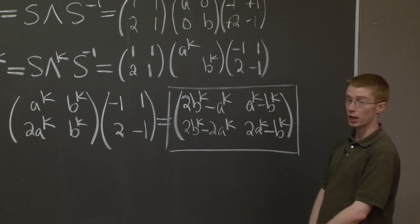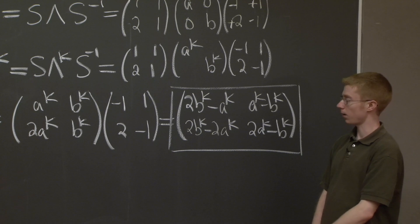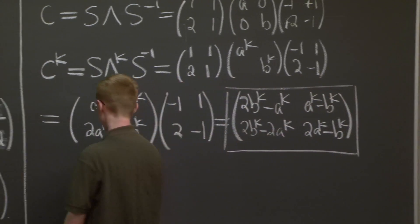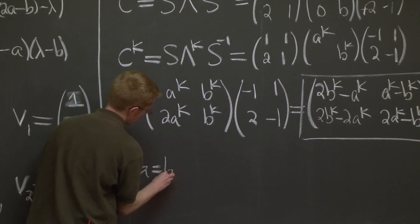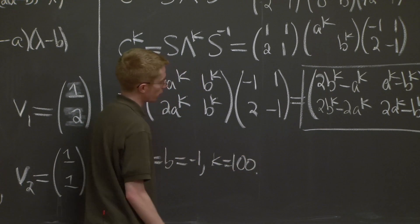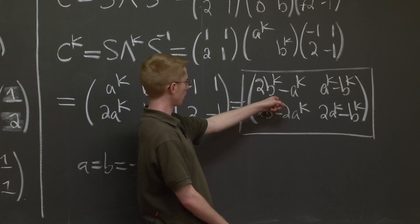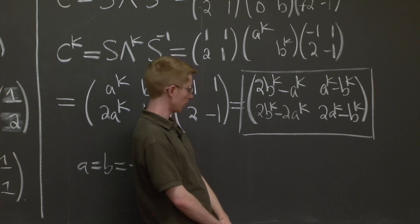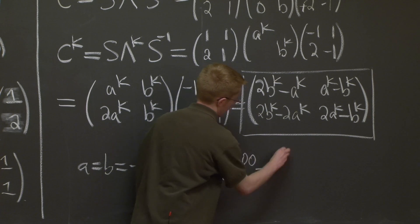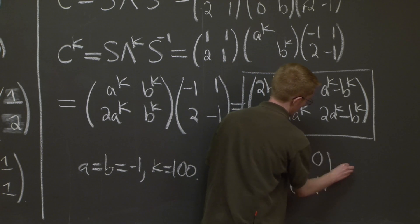Good. So now we've computed the K-th power of this matrix. Let's do a particular example. So let's plug in A and B are minus 1. So A equals B equals minus 1, and K equals 100. Then what do we get? Well, minus 1 to the 100th is just 1. So we're just plugging in 1 for B to the K and A to the K everywhere. And we just get, in this case, C the 100th is just the identity matrix.